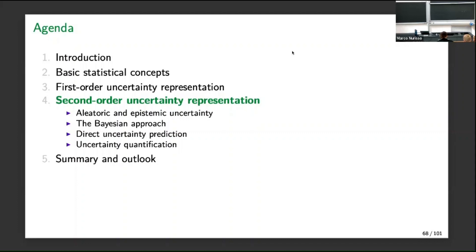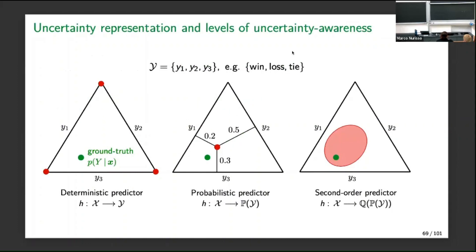You remember in the beginning I said we make this distinction between representation and quantification of uncertainty. If you reconsider what Victor and Willem have been speaking about, what Willem considered in the end is a situation like this. This is a graphical illustration of a three-class classification problem — suppose we are in a classification setting with three possible outcomes, for example win, loss, or tie of a football match.